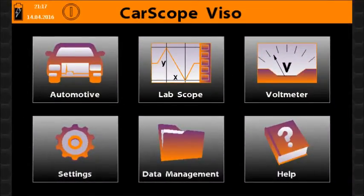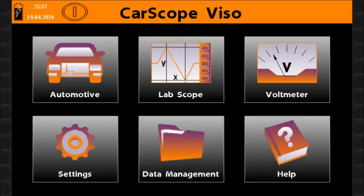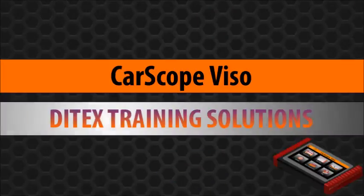The title bar from the home screen gives you information about the battery status, battery charging, current date and time. The turn off button turns off CarScope Viso immediately.